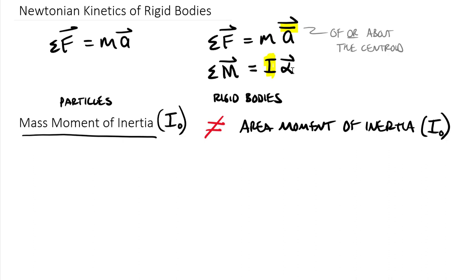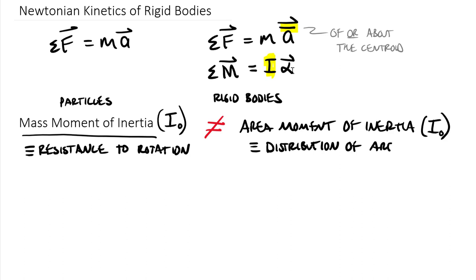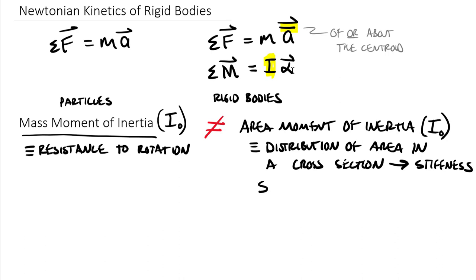The mass moment of inertia is defined as the resistance to rotation. The area moment of inertia is defined as the distribution of area in a cross-section, which is directly related to cross-sectional stiffness. Area moment of inertia is used in statics and mechanics of materials, while mass moment of inertia is used in dynamics.